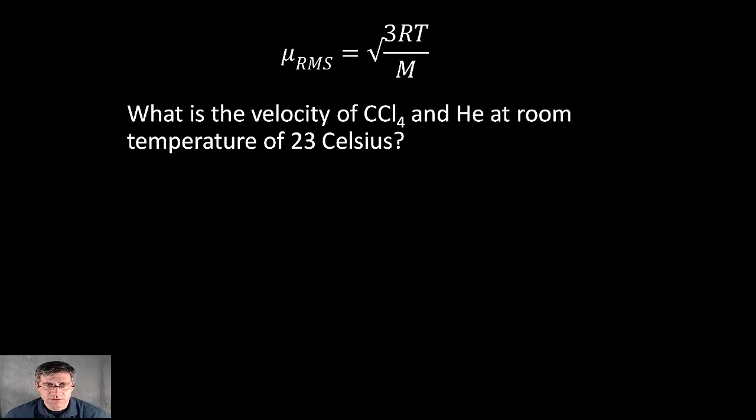So knowing the formula allows you to plug in numbers into this, and we can try a couple. What is the velocity of carbon tetrachloride and helium, both gases, at room temperature, assuming that's 23 degrees Celsius.